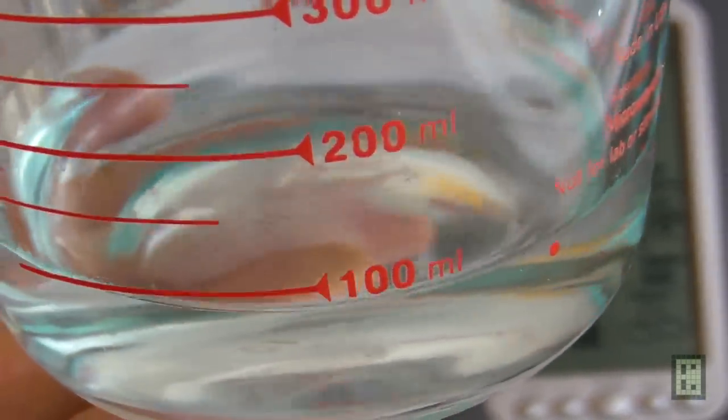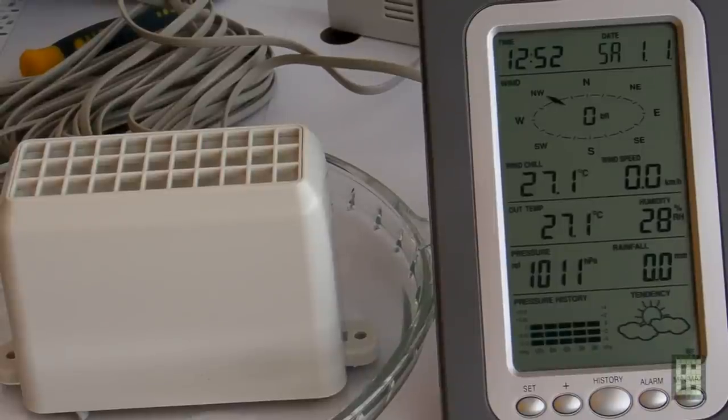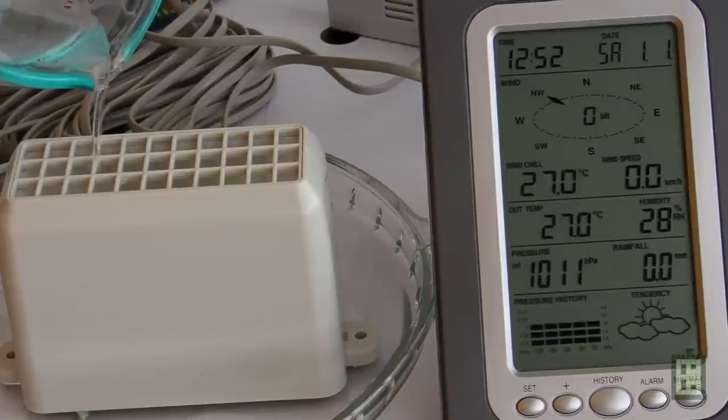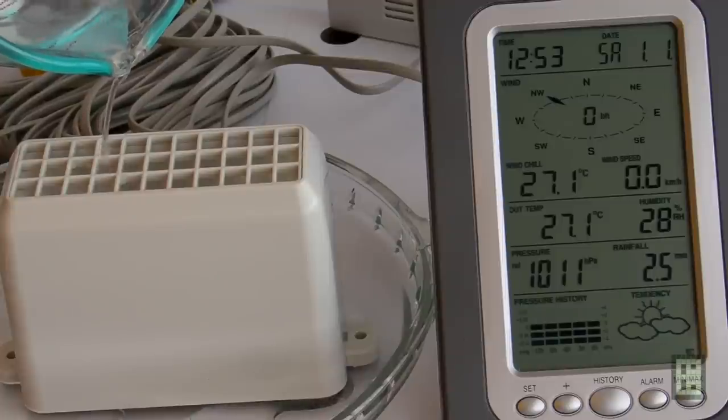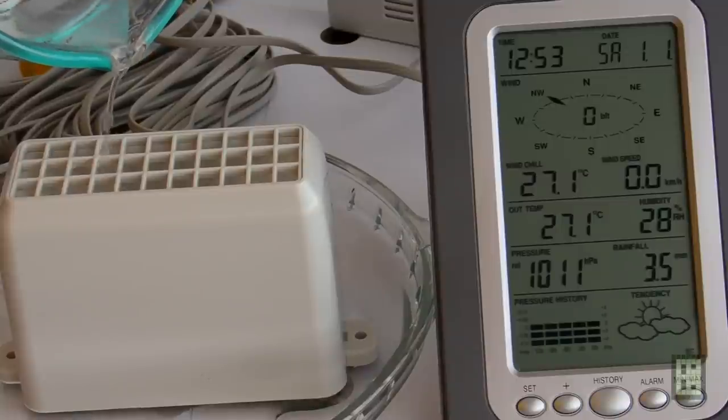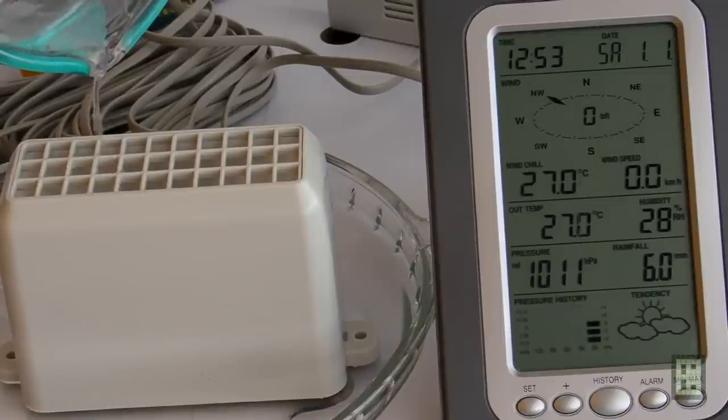And now I will do a test with 100 ml of water, so it's 10 times more. As you see, I already reset the rainfall, now it's zero. And you'll see that the resolution is 0.5 mm of rain. You can get this unit also in inches, but I prefer millimeters since I'm used with the metric system.